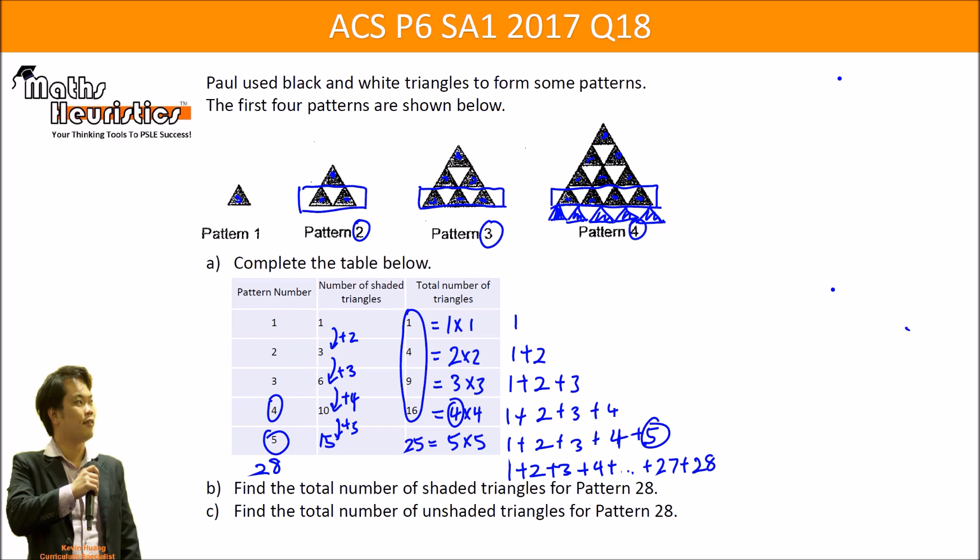So based on the idea that I discussed in an earlier video, you can check out the link below. This will be equal to half times 28 times 29 and that will give you 406. So this answers part B.